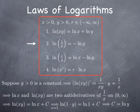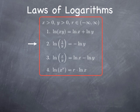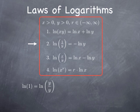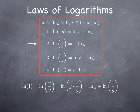Turning to the second law: we want to establish that ln(1/y) is the opposite of ln(y). Start with the fact that ln(1) can be written as ln(y/y), which equals ln(y times 1/y). Using the first law — log of a product is the sum of the logs — we get ln(y) plus ln(1/y). But ln(1) is 0, so ln(y) plus ln(1/y) equals 0, which means ln(1/y) equals negative ln(y).